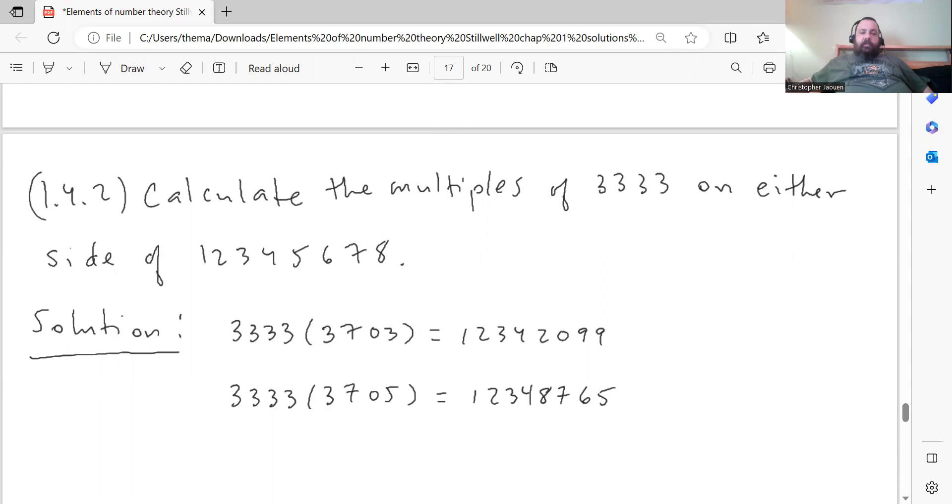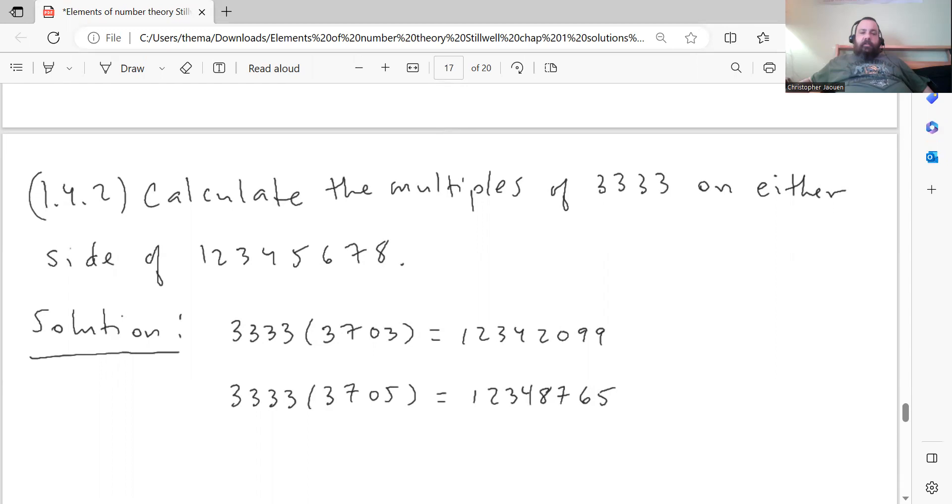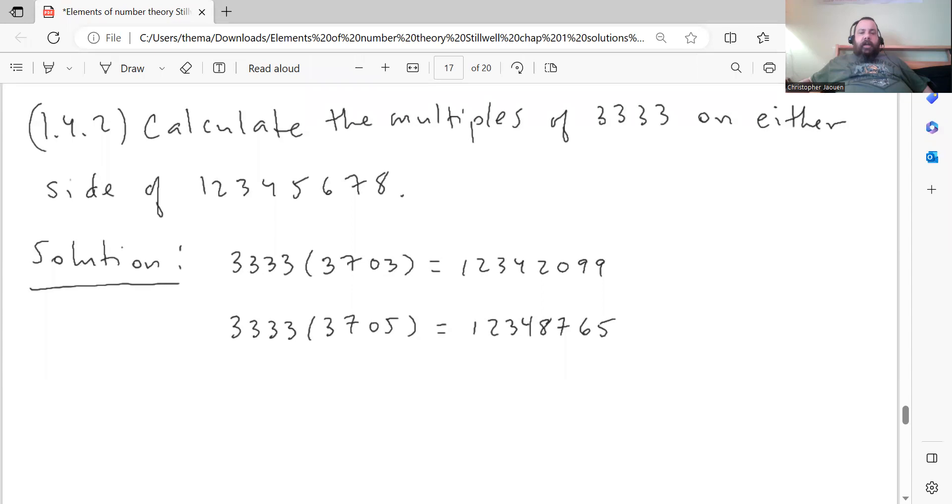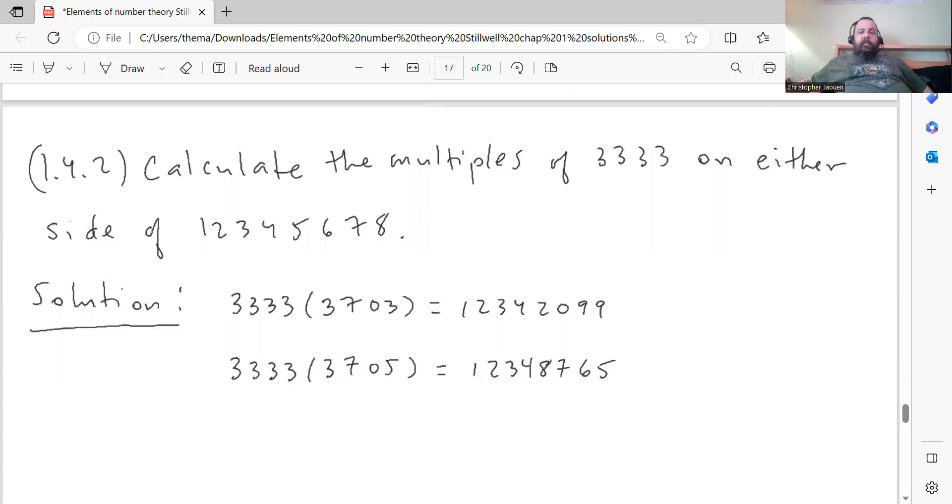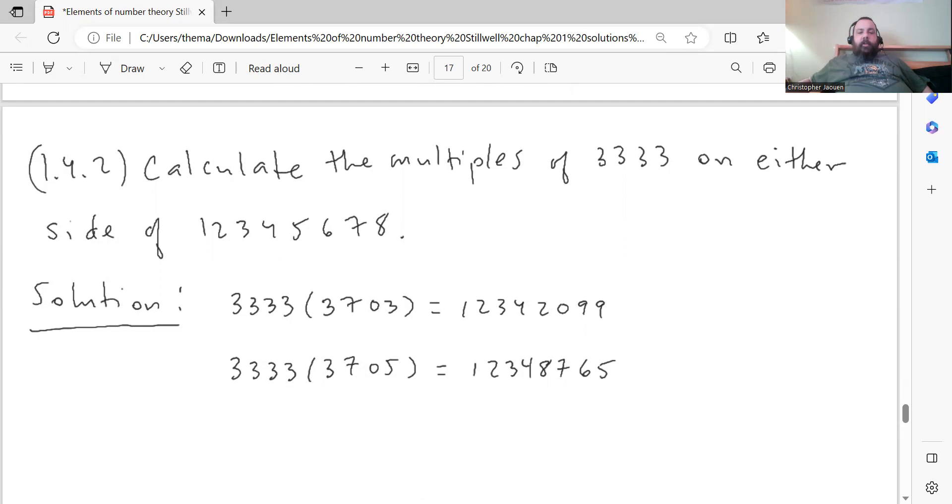Next question is similar. Calculate the multiples of 3333 on either side of 12345678. So all you do is subtract 1 from the quotient in the previous problem and add 1 to the quotient in the previous problem. That gives you the multiples on either side of the number that we are interested in. So 3333 times 3703 gives you 12342099. And 3333 times 3705 is 12348765. So these are the multiples of 3333 on either side of the number that we had over here.